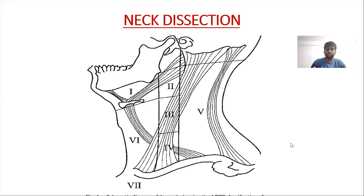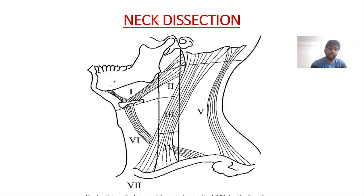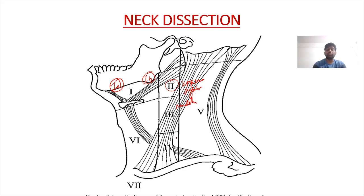Let us first look into the various stations of lymph nodes. As we can see in the image, station 1 lymph node is in the submental and submandibular region, divided into 1A (submental) and 1B (submandibular). Station 2 is the upper jugular group, station 3 is the middle jugular, and station 4 is the lower jugular lymph node — all along the jugular vein.